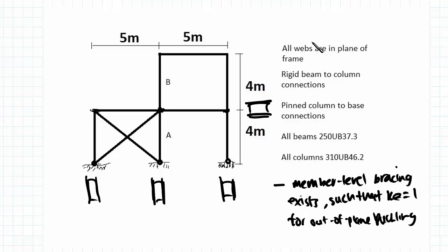Alright, so that's this one checked. Rigid beam to column connections means that whenever the beam joins up with a column, it has a rigid connection. And you'll need that to find BE.